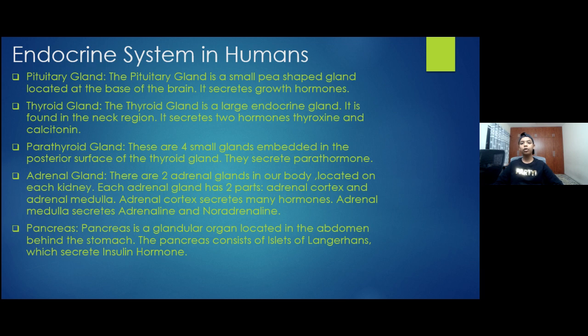The parathyroid glands are four small glands embedded in the posterior surface of the thyroid gland. They secrete parathormone.